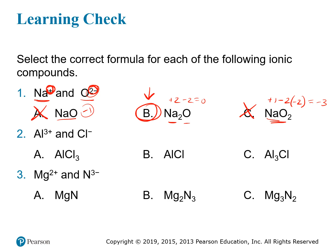For the second question, we have aluminum 3+ and chloride Cl⁻. Since chloride is minus-one, we use as many chlorides as needed to balance the plus-three charge on aluminum. Aluminum is three-plus, so we need three chlorides, giving us one aluminum and three chlorides — AlCl₃, which is answer A. Checking the other options: Al plus one Cl gives plus-three plus minus-one, which is plus-two, so that's no good. For Al₃Cl, three aluminums each at plus-three gives nine, minus one from chloride, resulting in plus-eight — clearly wrong. So A is the correct answer.